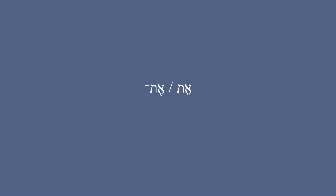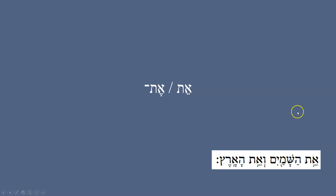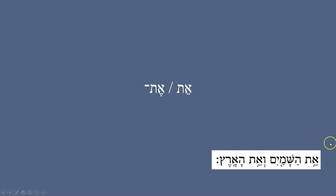'Et' is the definite direct object marker. In Genesis 1 — 'bereshit bara Elohim et hashamayim v'et ha'aretz' — it's marking out what is the direct object of the verb. So what is being created (bara) is hashamayim ha'aretz — the heavens and the earth.